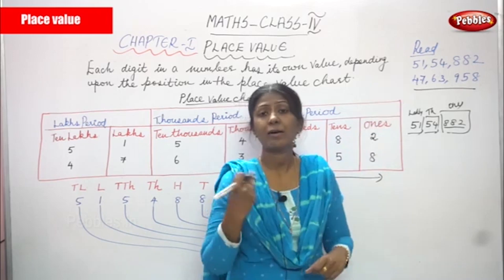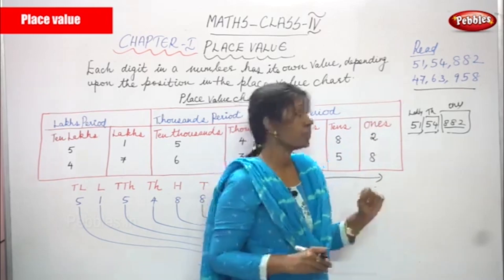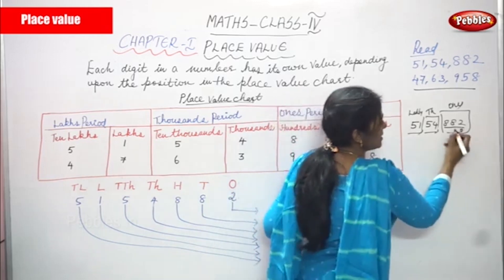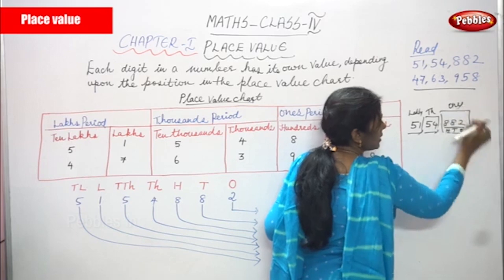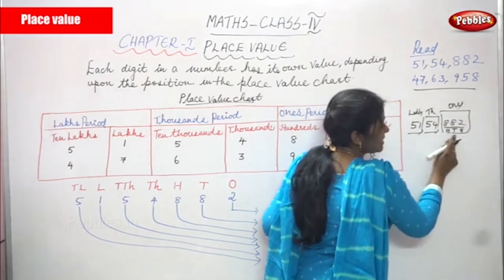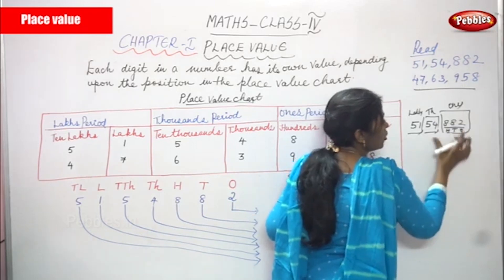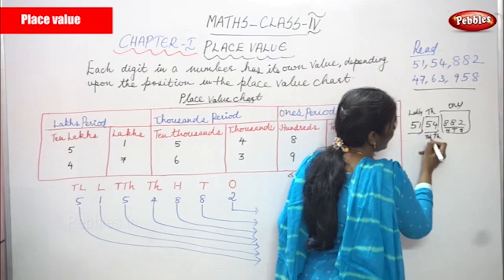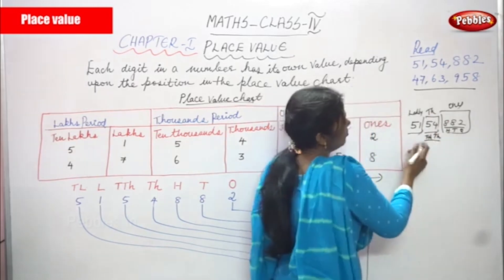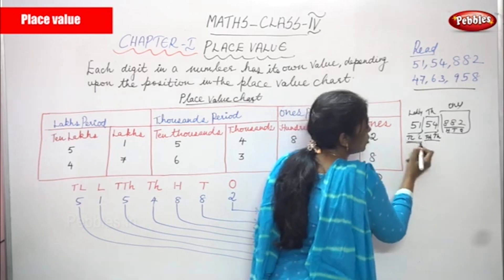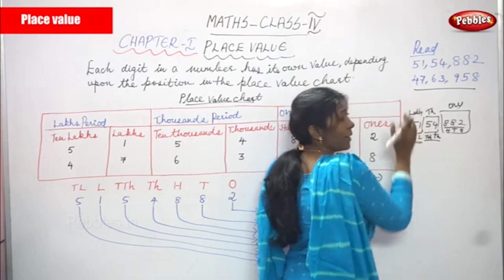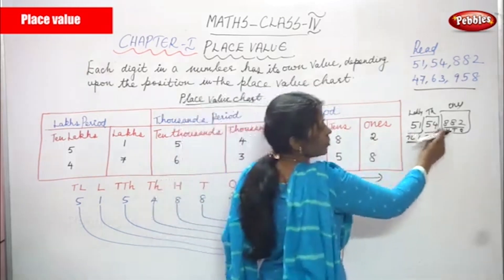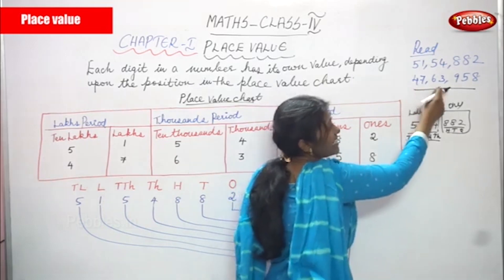The abbreviations are: O means ones, T means tens, H means hundreds — these combine to form the ones period. TH means thousands and TTH means ten thousands — this is the thousands period. L means lakhs and TL means ten lakhs — these two combined form the lakhs period. So 51 lakhs 54 thousand eight hundred and eighty-two, and the next number is 47 lakhs 63 thousand nine hundred and fifty-eight.